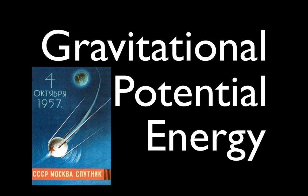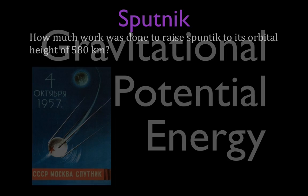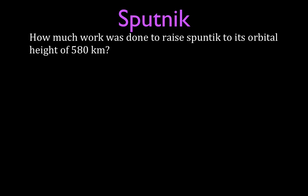In today's video we're going to go over an example problem involving gravitational potential energy. We are going to calculate the change in potential energy for this object — if you don't recognize it, this is Sputnik. It was launched on the 4th of October 1957, the first artificial satellite to orbit the Earth, launched by the Soviet Union. We're going to figure out how much work was done to raise Sputnik to its orbital height of approximately 580 kilometers.